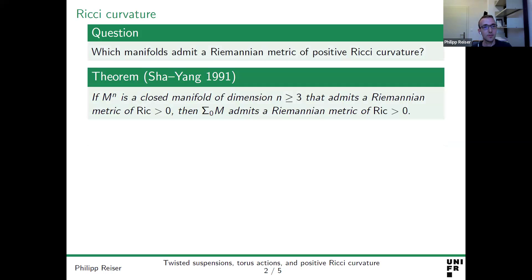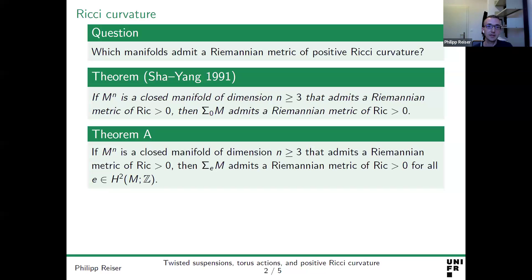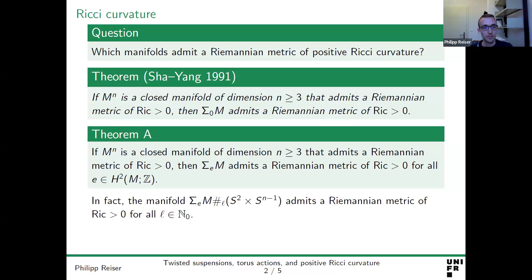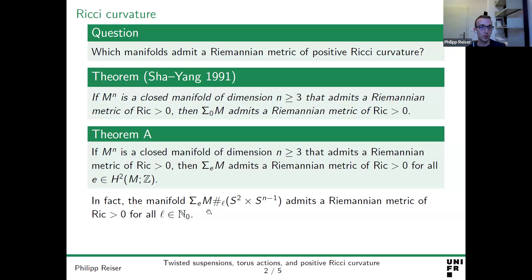Our first main result is that exactly the same statement holds if we replace the spinning by the twisted suspension, for any cohomology class e we choose. As a remark, we can do a bit more: connected sums with copies of S2 × S^{n−1} also admit a Riemannian metric of positive Ricci curvature. This comes from taking multiple disjoint local trivializations of the principal bundle; the effect is a connected sum.